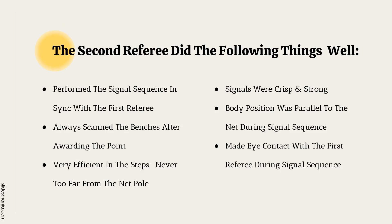Here are things done well when required to end the rally by whistle: signal sequences were performed in sync with the first referee; both benches were scanned after awarding the point; steps were efficient and never too far from the net pole even when stepping out to give signal sequences; signals were crisp and strong; body positions were parallel to the net during the signal sequence; and eye contact was maintained with the first referee during signal sequences.